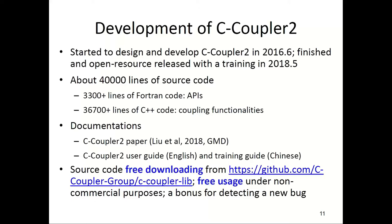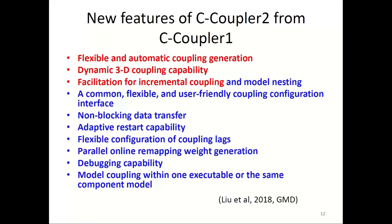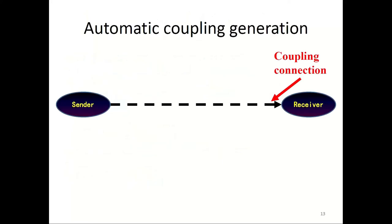C-Couplers 2 can be freely downloaded from GitHub with source code and documentation, and it is free for non-commercial usage. Compared to C-Couplers 1, C-Couplers 2 achieves a series of new features, including flexible and automatic coupling generation, dynamic 3D coupling capability, facilitation for incremental coupling and model listing, a common flexible and user-friendly coupling configuration interface, non-blocking data transfer, adaptive restart capability, parallel online remapping weight generation, debugging capabilities in parallel, and coupling within the same component model. More details can be found in the GMD paper published in 2018.